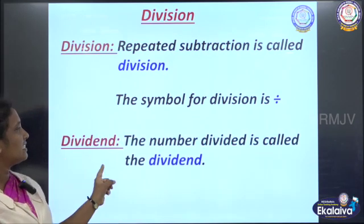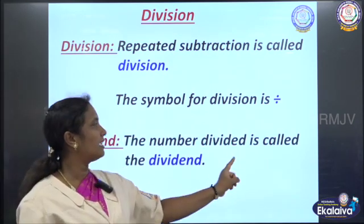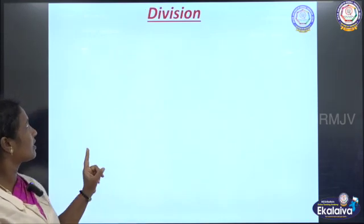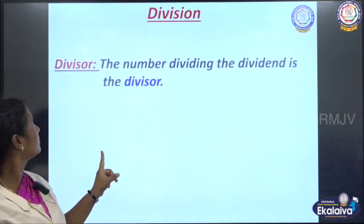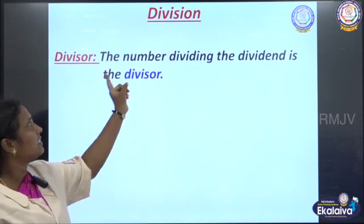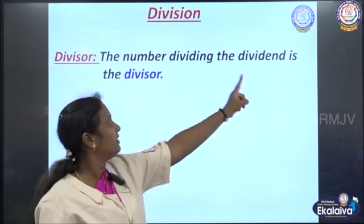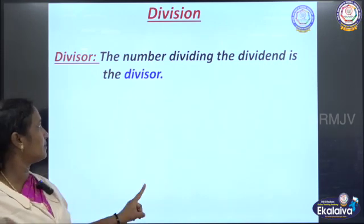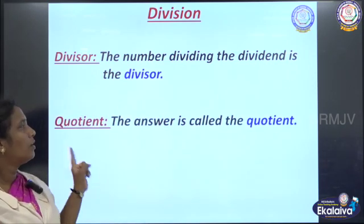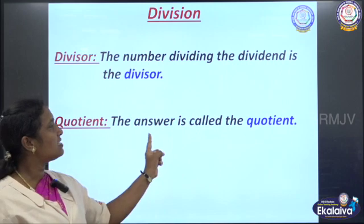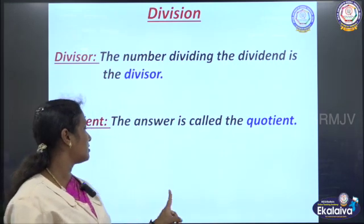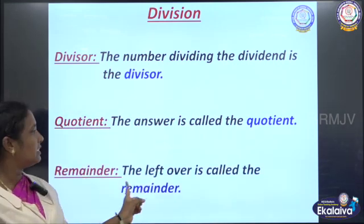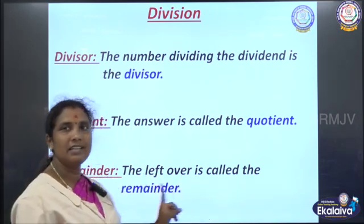Dividend — the number being divided is called the dividend. Divisor — the number dividing the dividend is called the divisor. Quotient — the answer is called the quotient. Remainder — the leftover is called the remainder.